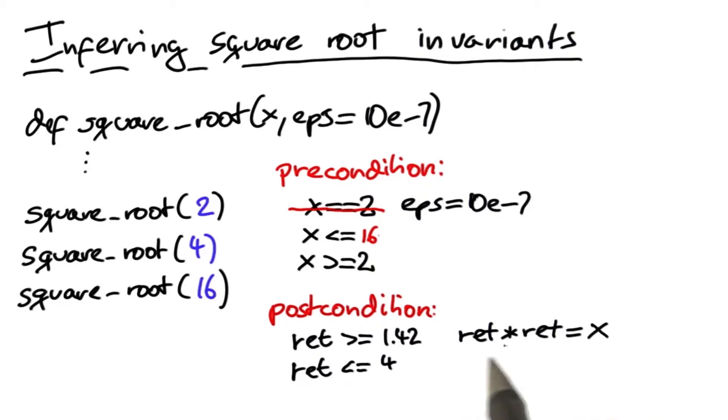However, what we also get is that the return value squared is equal to x. And we get this because daikon has an appropriate pattern for that, namely a pattern where the multiplication of any two variables equals a third variable.